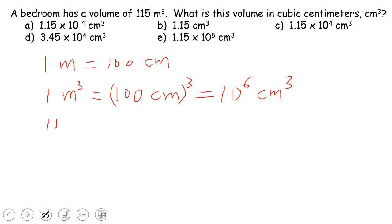We have 115 cubic meters. We want to convert from cubic meters to cubic centimeters using this relationship. 1 cubic meter equals 1 million, 10 to the 6 cubic centimeters.